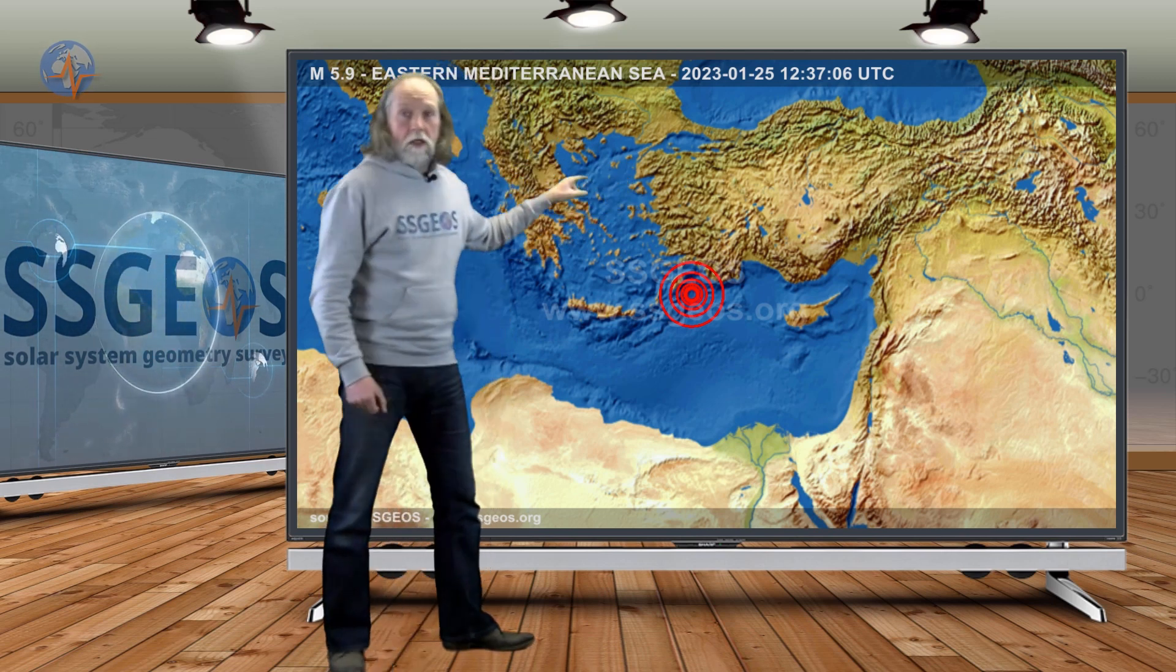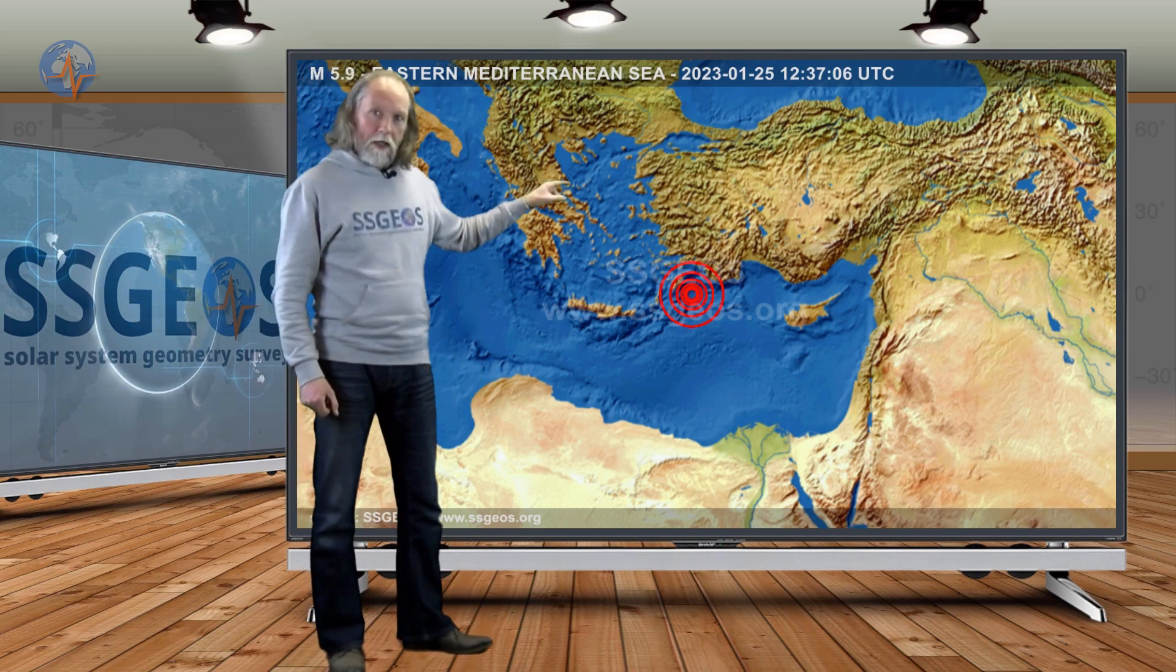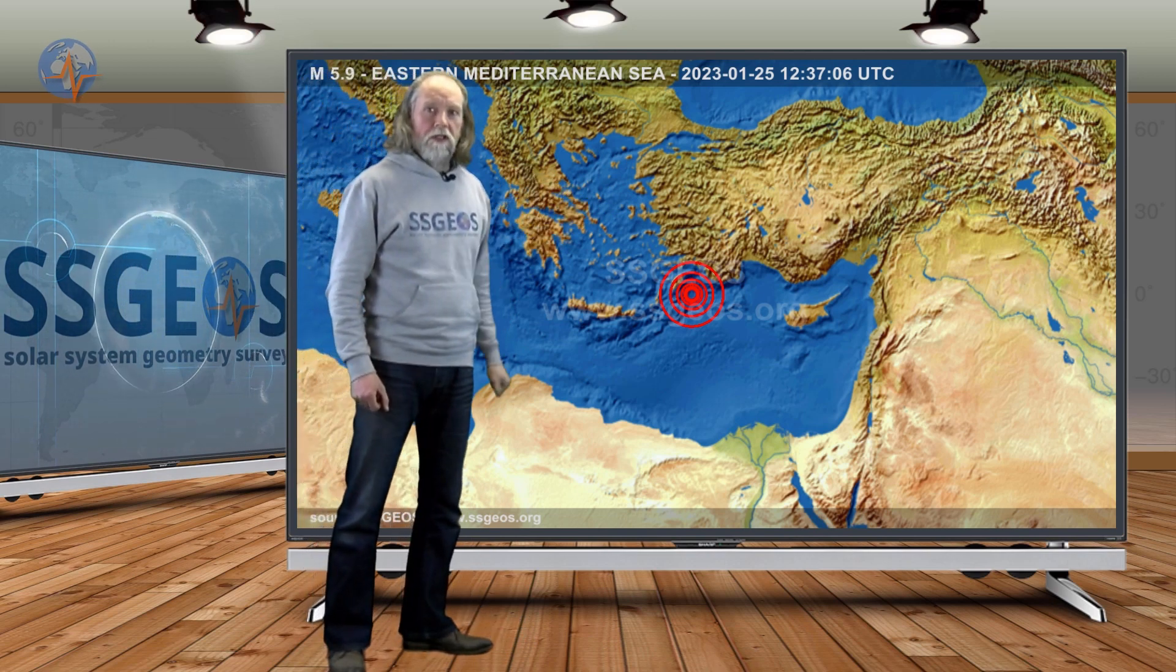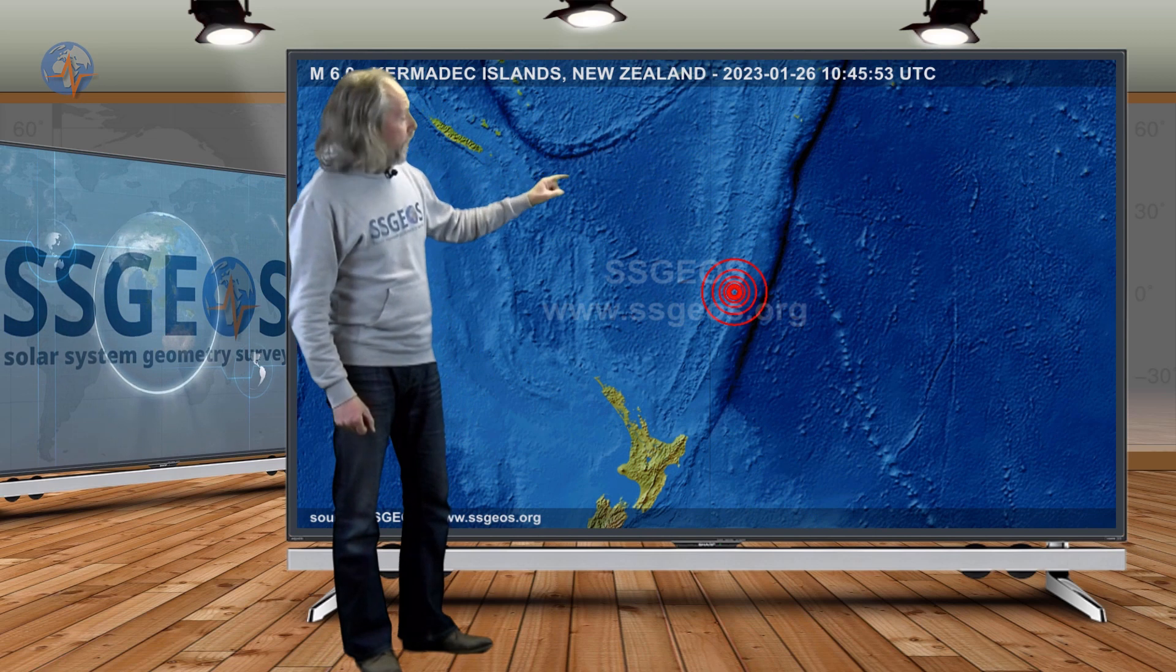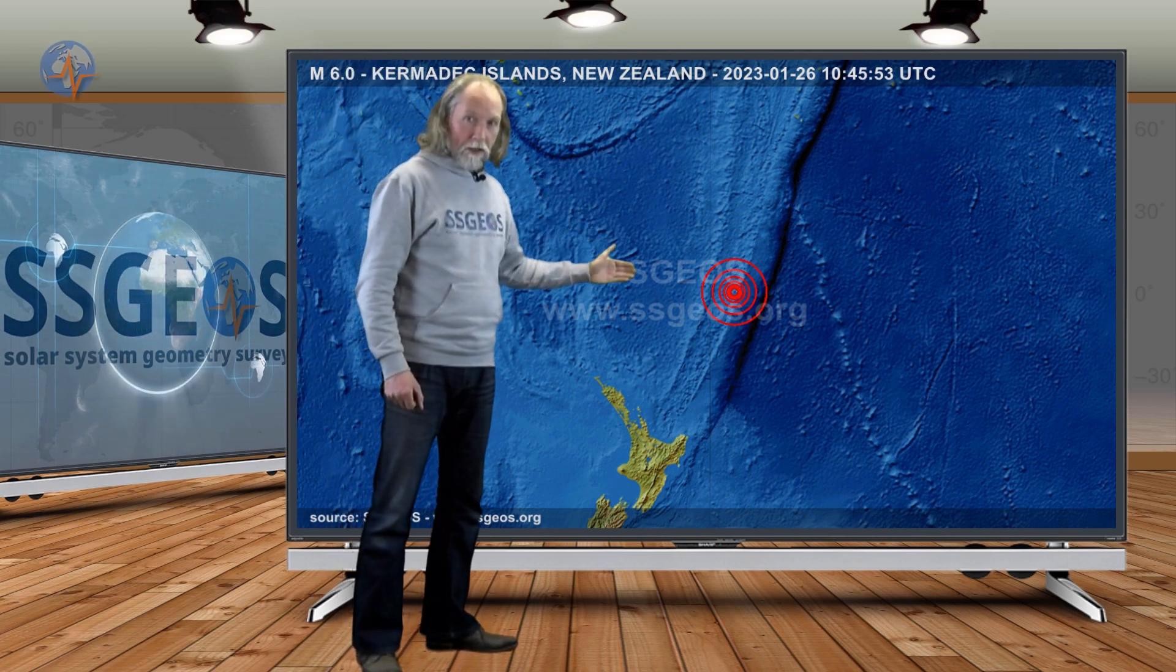When I saw that seismic activity, the first thing that crossed my mind was Kermadec, because that would be typical antipode activity. And yes, this morning a six pointer, borderline six, at the Kermadec Islands.